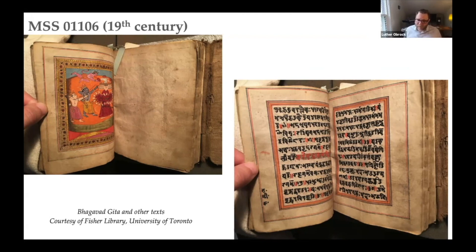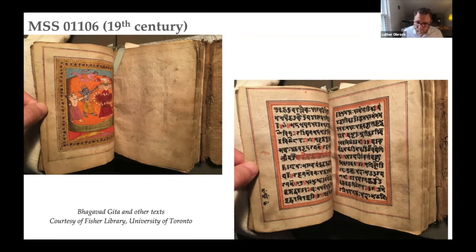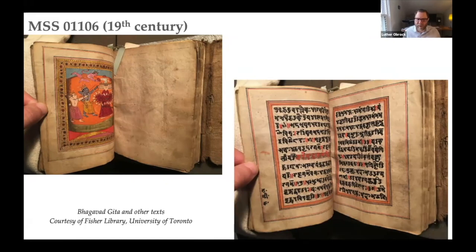Beyond the contents of the text, the construction of the Fisher Manuscript also deserves further investigation. We can see from the script that it's written in Sharada, a particular regional script used in Kashmir. It also contains finely done illuminations of Hindu deities — for instance, the demon King Ravana being slain by the hero Rama, along with his brother and his monkey ally Hanuman. Yet we can also see in these pages a certain source of Islamicate page layouts, including the borders we tend to see in Islamic paper manuscripts.